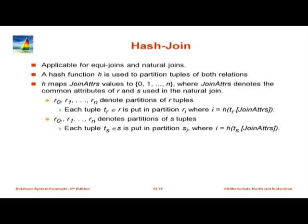The last major technique is the hash join. This algorithm is applicable for equi joins and natural joins, just like merge join. The condition is r.a = s.b, and you can also have multiple attributes being equated, such as r.a = s.b AND r.c = s.d, sorting on those pairs of attributes.